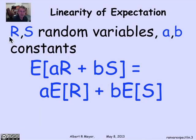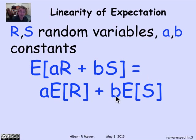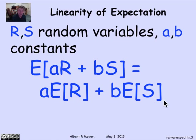What that means is that if you have two random variables r and s, and two constants a and b, the expectation function is linear. You take a linear combination of r and s — ar plus bs — and that's equal to the corresponding linear combination of the expectations. Expectation of ar plus bs is equal to a times the expectation of r plus b times the expectation of s. Expectation is linear.